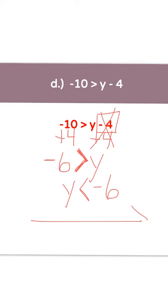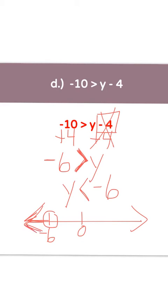Now draw the number line with 0 and negative 6. Draw the circle at the negative 6. There is no equal sign — only less than — so it stays an open circle. The arrow goes less than, or to the left. Your answer is an open circle at negative 6 with an arrow going to the left.